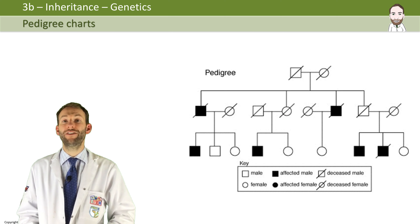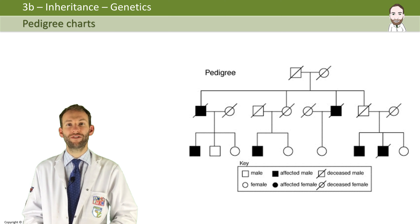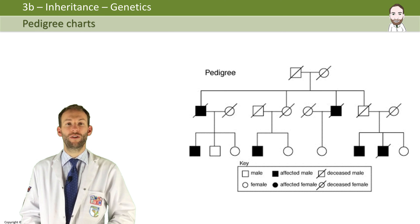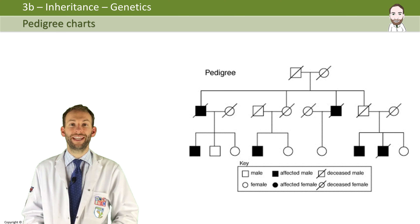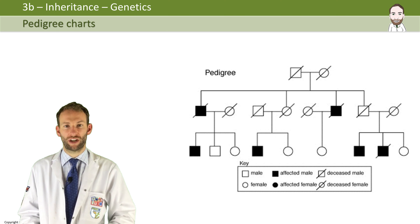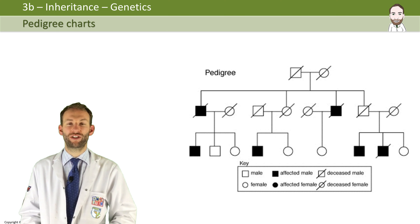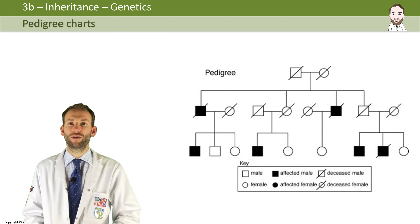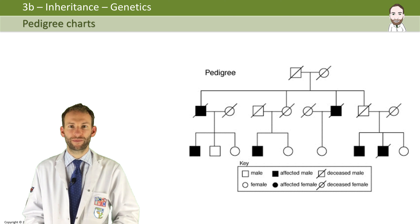Knowing how inheritance works allows you to interpret special family tree diagrams which show genetic disorders, and these are called family pedigree charts.